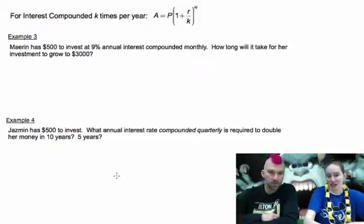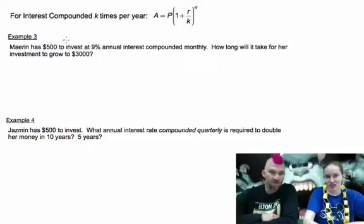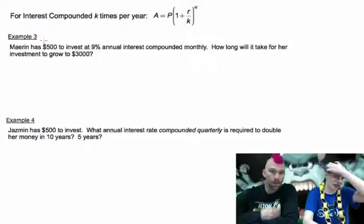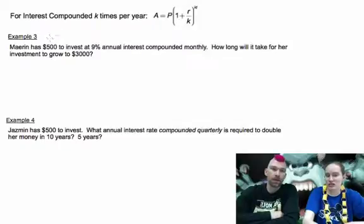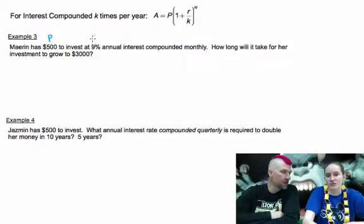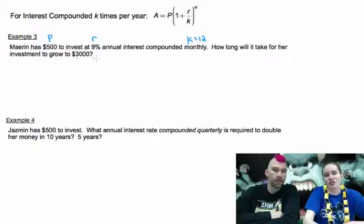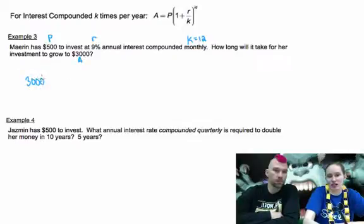Example three: Marin has $500 to invest at 9% annual interest compounded monthly. How long will it take for her investment to grow to $3,000? Oh, they don't give us a T here. Yeah, monthly means that K will be 12. Right. And we're trying to figure out when A will be $3,000. So if we set that up.